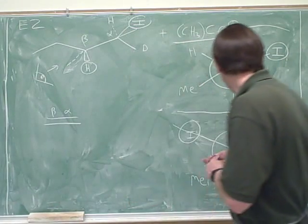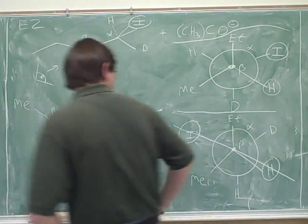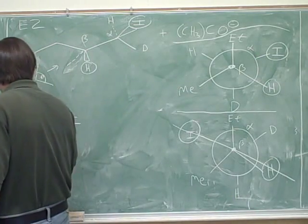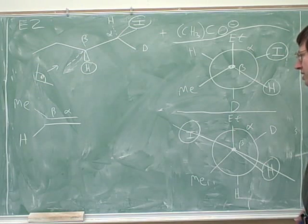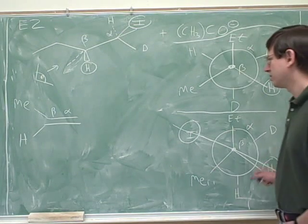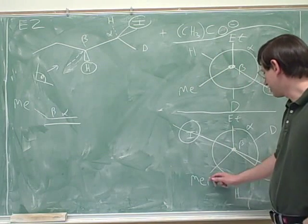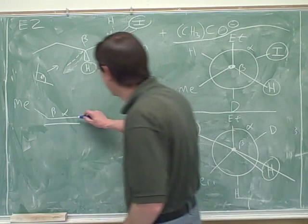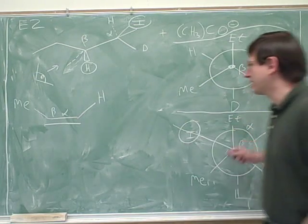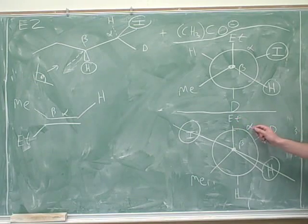So here's beta and here's alpha. The beta-carbon has the methyl group on it. And we know we have retention of configuration, so since the methyl was cis to the hydrogen in this picture, it should also be cis to the hydrogen in this picture. And then on the alpha-carbon — so the methyl group is on the beta-carbon, and then the hydrogen is cis, but it's on the alpha-carbon. So then the ethyl group here is on the beta-carbon, and the deuterium is cis to the ethyl, but it's on the alpha-carbon.